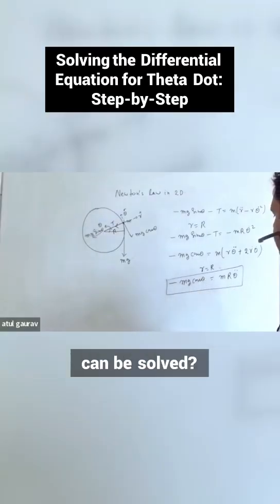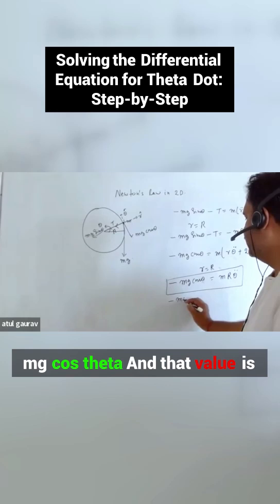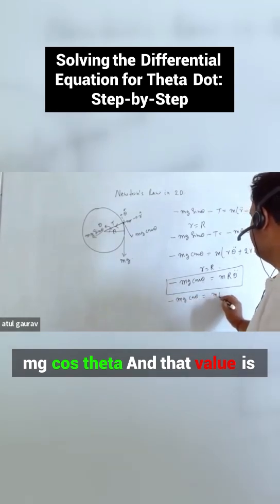How can this differential equation be solved? This can be solved: minus mg cos theta and that value is mr.